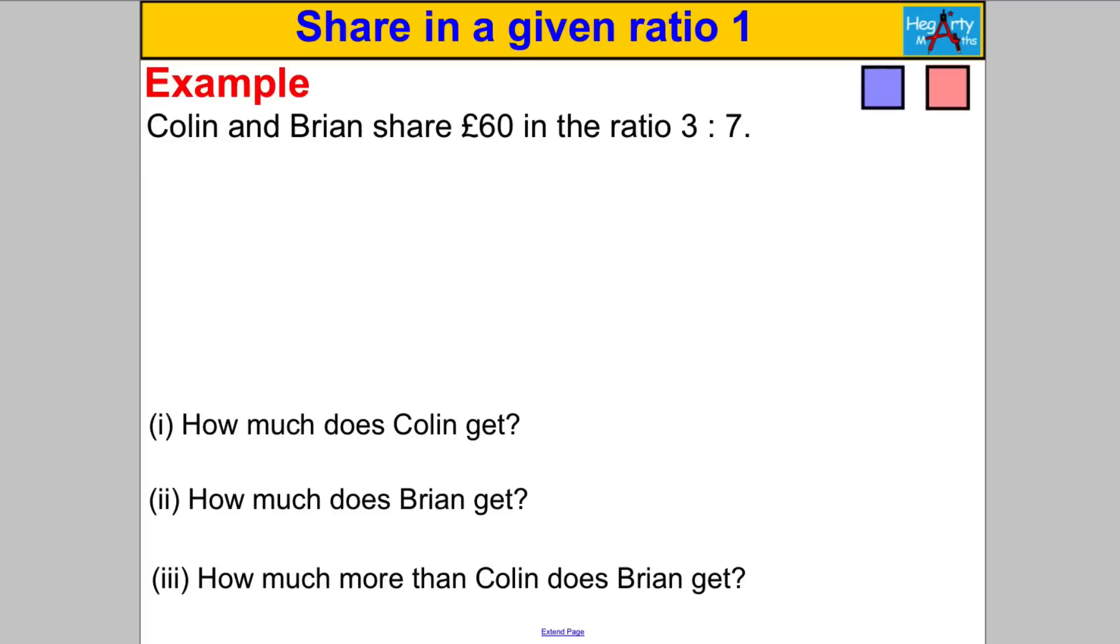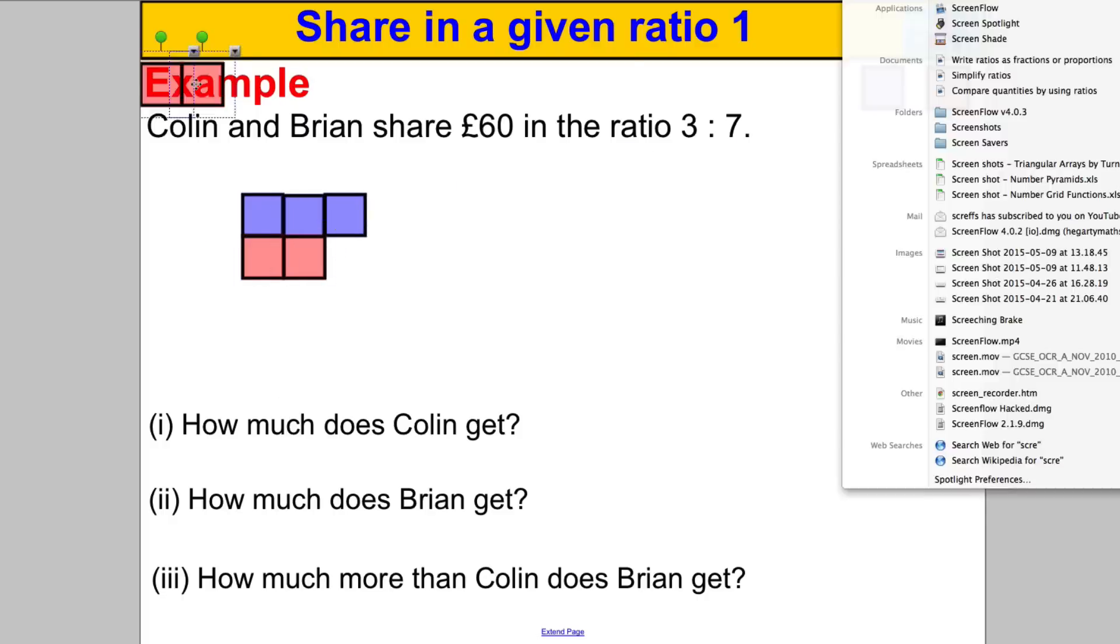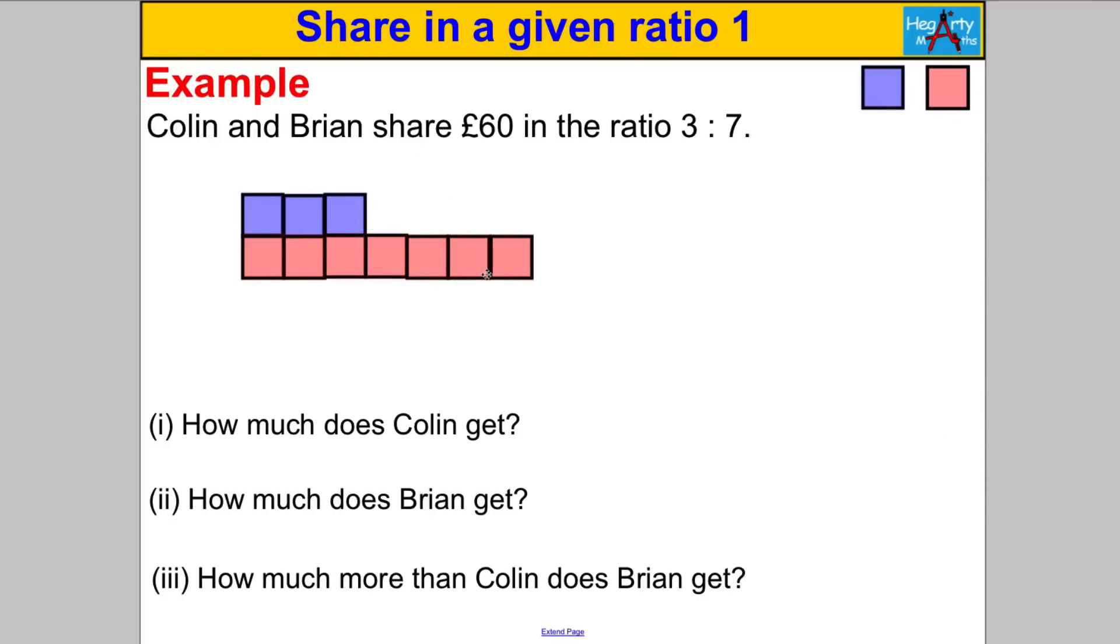Let's have a go at another one. Pause the video, have a go, and do draw the picture. So Colin and Brian share 60 pounds in the ratio 3 to 7. Let's draw that picture. Colin gets three parts, Brian gets the lion's share which is seven parts there. Now in total they're sharing 60 pounds, so the whole lot there is worth 60 pounds.